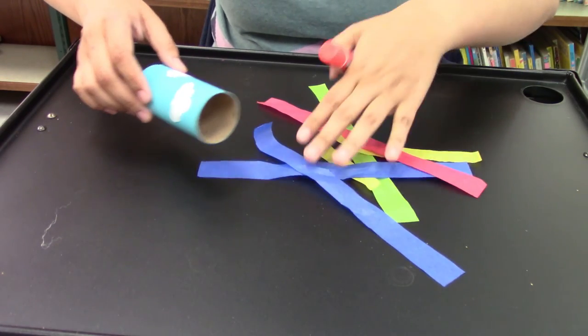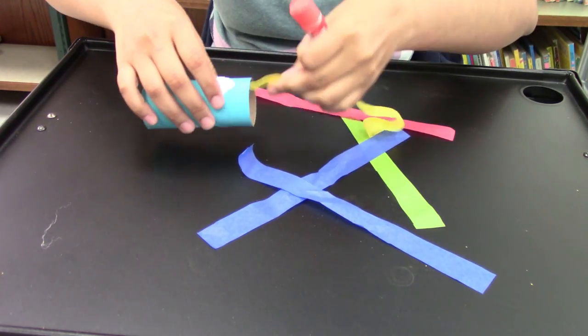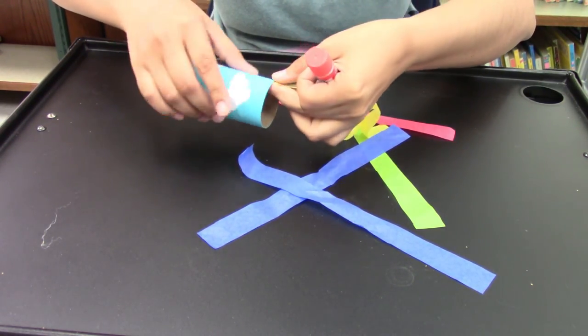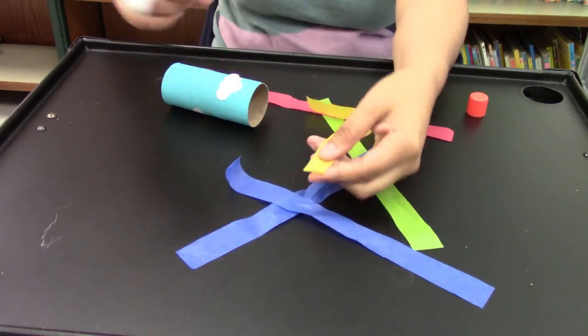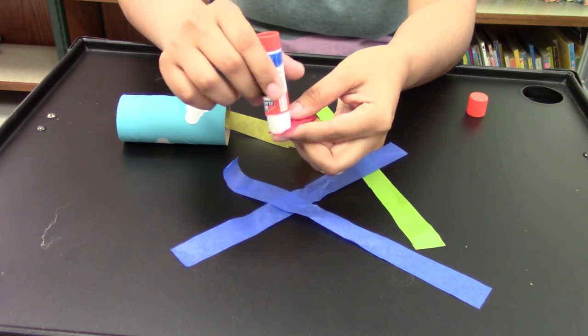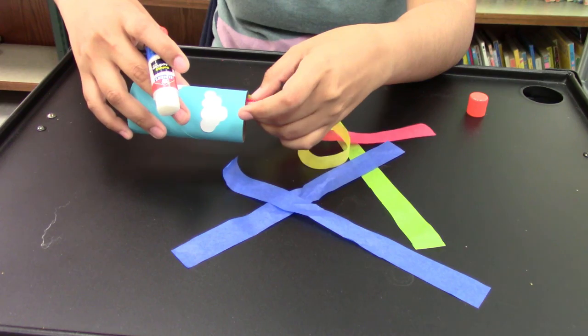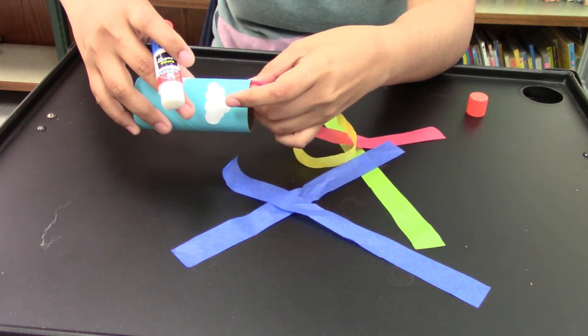Your last step is to take your streamers and glue them to the inside ledge of one end. Try to do it in a rainbow pattern. We don't exactly have all the colors here, so we're just going to do it willy-nilly.